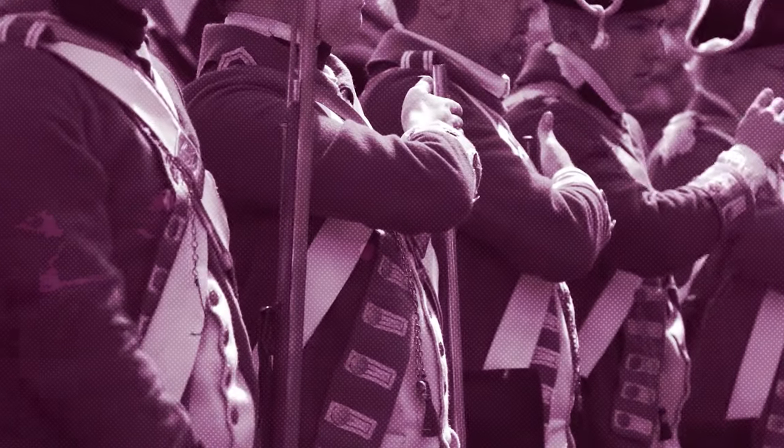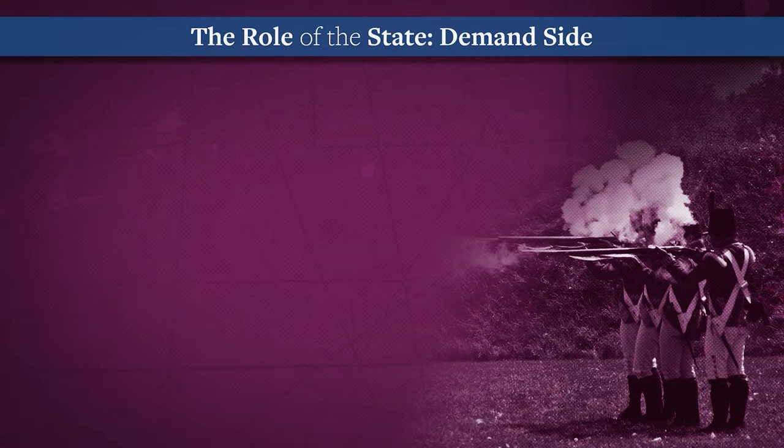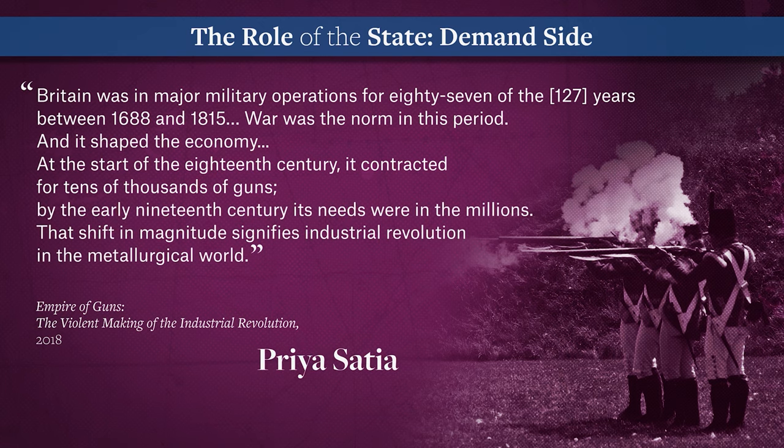We now turn from economic theory and empirics to political history and discover that the effective motivation for state intervention was not market failure — it was national security. To begin: England and the first industrial revolution, and the state's role on the demand side of technological change. Priya Satya documents the increased demand for guns by the British army from the Glorious Revolution of 1688 to Waterloo in 1815, from 10,000 a year to millions per year. This demand pulled Britain's artisanal economy into radical innovations in industrial structure and made Birmingham, England, the workshop of the first industrial revolution, driven by Adam Smith's division of labor.